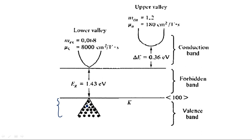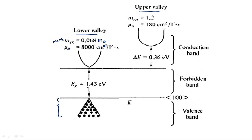Looking at the energy band diagram: the bottom part shows the valence band where electrons initially reside. Above the valence band is the forbidden band with an energy gap of 1.43 electron volts, and above that is the conduction band. The conduction band has two regions — the lower valley region and the upper valley region. In the lower valley region, the effective mass of the electron is 0.068 m0 and the mobility is 8000 centimeter square per volt second.